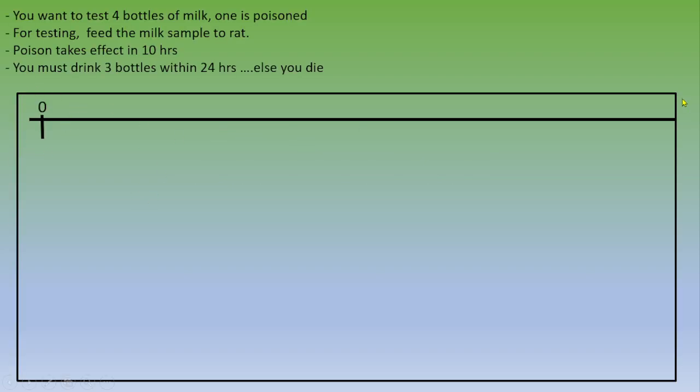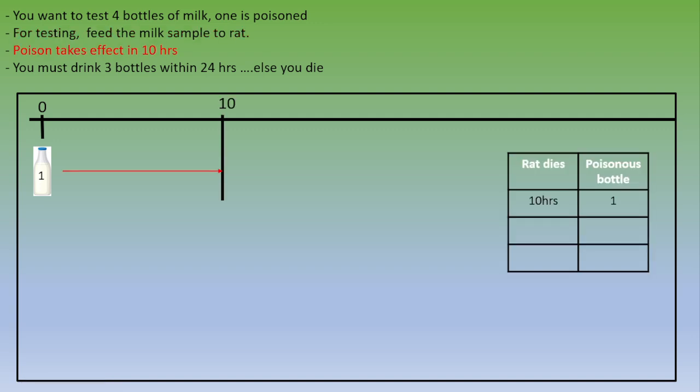First, there is a timeline starting from zero, t equals zero, and then we are going to test bottle number one. The poison takes effect in 10 hours. So at hour 10, two options: first, the rat will die and the poison is on bottle one, so you can drink bottles two, three, and four.